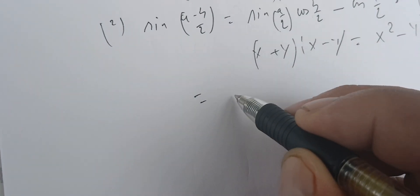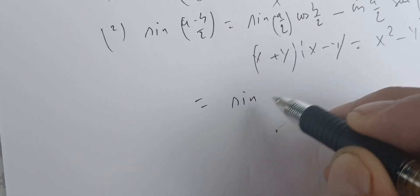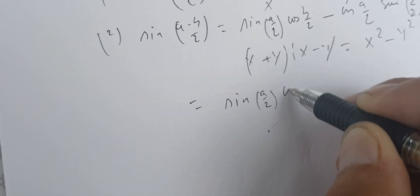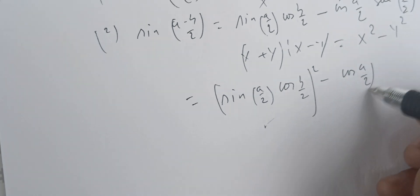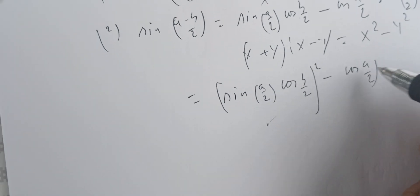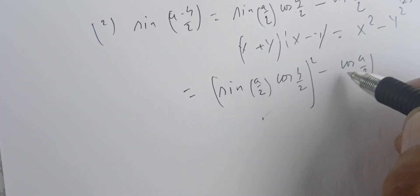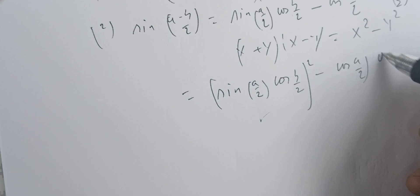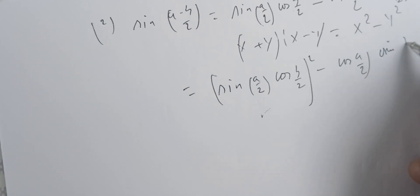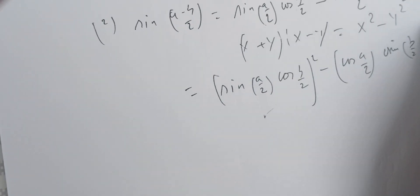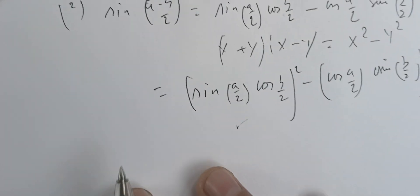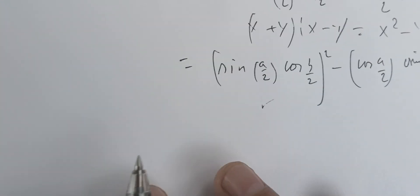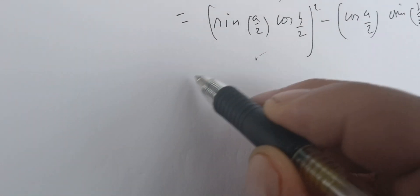So x² is sine²(a/2)·cos²(b/2) and y² is cos²(a/2)·sine²(b/2). Our expression becomes sine²(a/2)·cos²(b/2) minus cos²(a/2)·sine²(b/2).